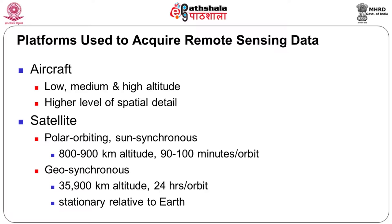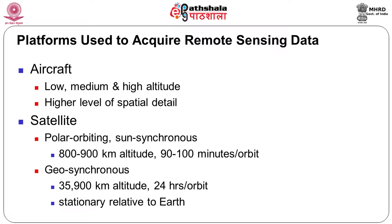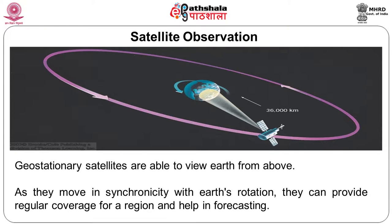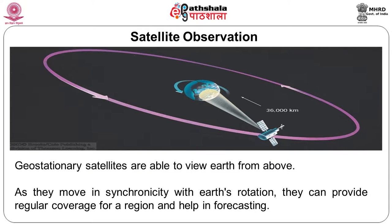Geostationary satellites, as the name indicates, are stationed towards a particular part of the earth at an altitude of approximately 35,900 kilometers - roughly 36,000 kilometers. They are always looking at a specific place throughout their lifetime with a 24-hour orbit. These are the most important satellites used for telecommunication purposes and weather forecasting purposes.